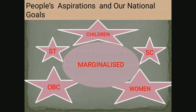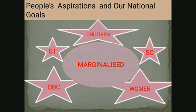We must ensure that the interests of Scheduled Castes, Scheduled Tribes, Backward Classes, minorities, women, and children are protected and justice is provided to them. The continuing crimes against weaker sections, women, and children are a matter of distress in a civilized society, especially one that is emerging as a leader in science and technology. This is the essence of people's aspirations and our national goals.